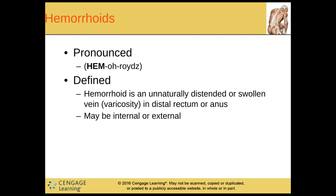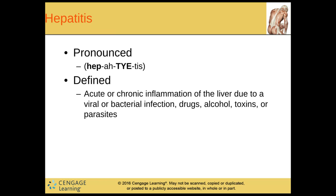And then we have hemorrhoids. A hemorrhoid is an unnaturally distended or swollen vein in the distal rectum or the anus. It may be internal or external. We have hepatitis — acute, meaning it happens rapidly, or chronic, something that happens over a period of time. It's inflammation of the liver due to a viral or bacterial infection. It could also be caused by drug use, alcoholism, toxins, or parasites.